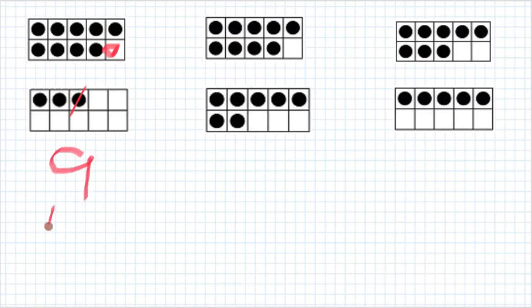So 9 plus 3. What I like is counting on as well, so I have 9, 10, 11, 12. That's what I like about these numbers that have points.